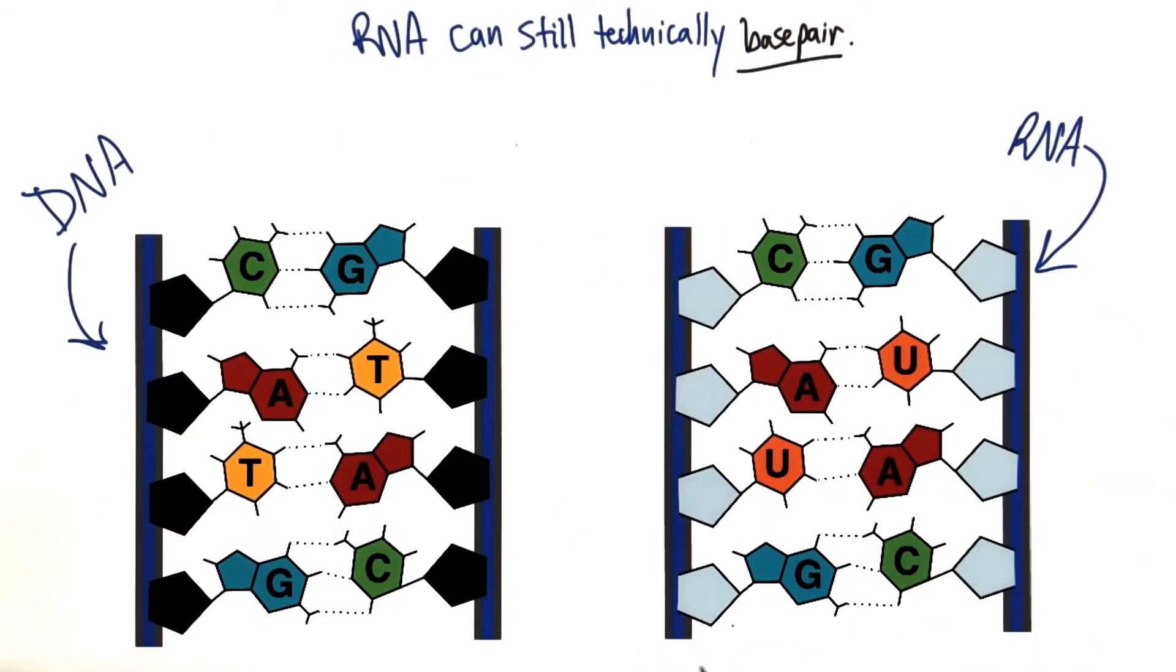So this means that RNA also has the ability to base pair. In this case, uracil behaves in RNA like thymine behaves in DNA. And so uracil binds with adenine the same way that thymine would bind with adenine.